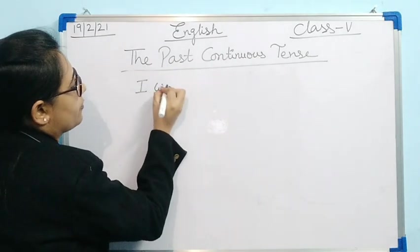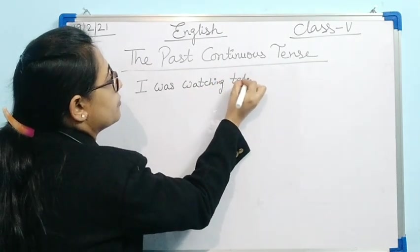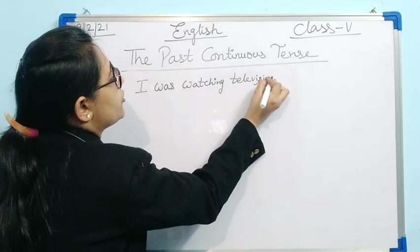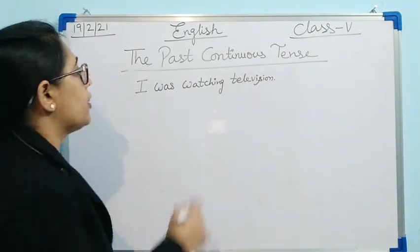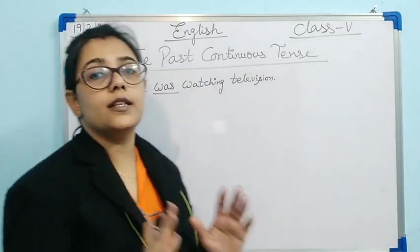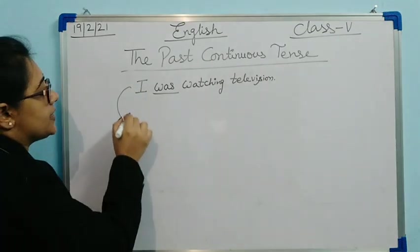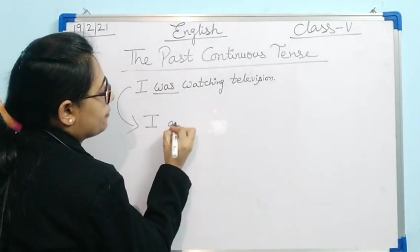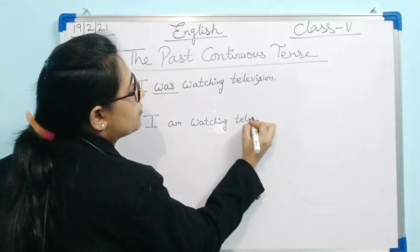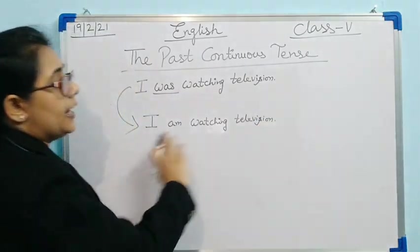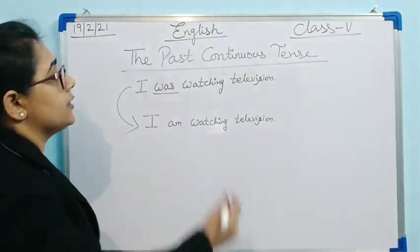Let's see an example: 'I was watching television.' This sentence is in past form. How can you tell? Because it has 'was'. 'Was' is a helping verb used in past tense. If I write this sentence in present form it becomes: 'I am watching television' — that is present continuous tense. And 'I was watching television' is past continuous tense. Both sentences are the same except the helping verb has changed.